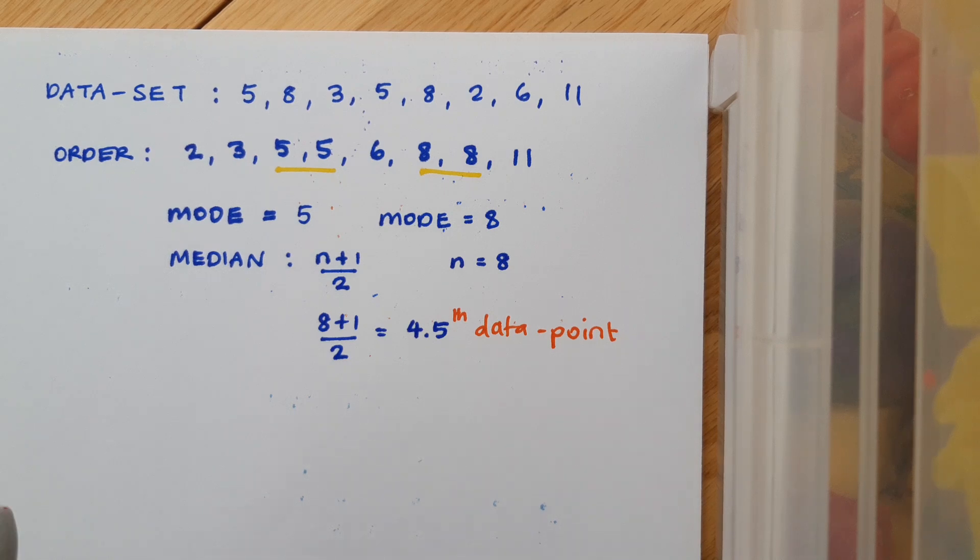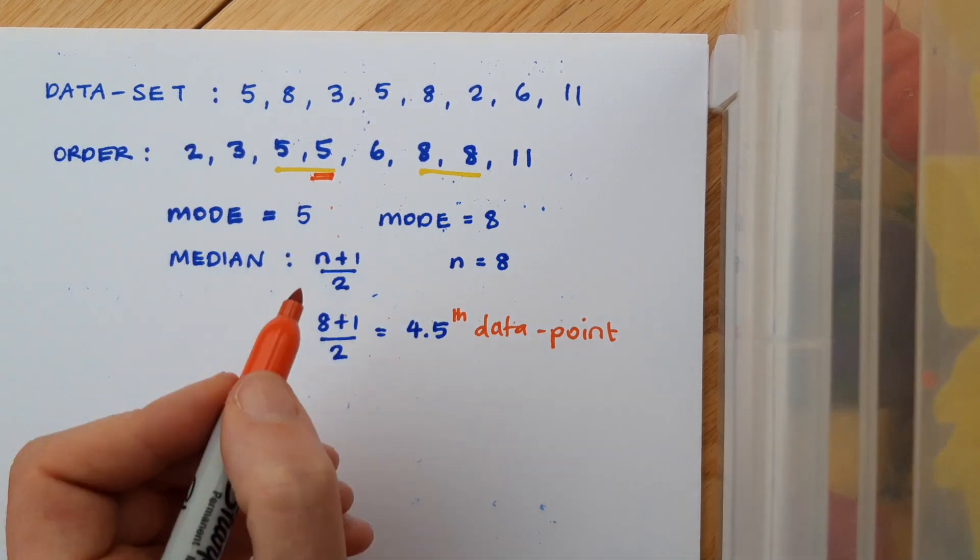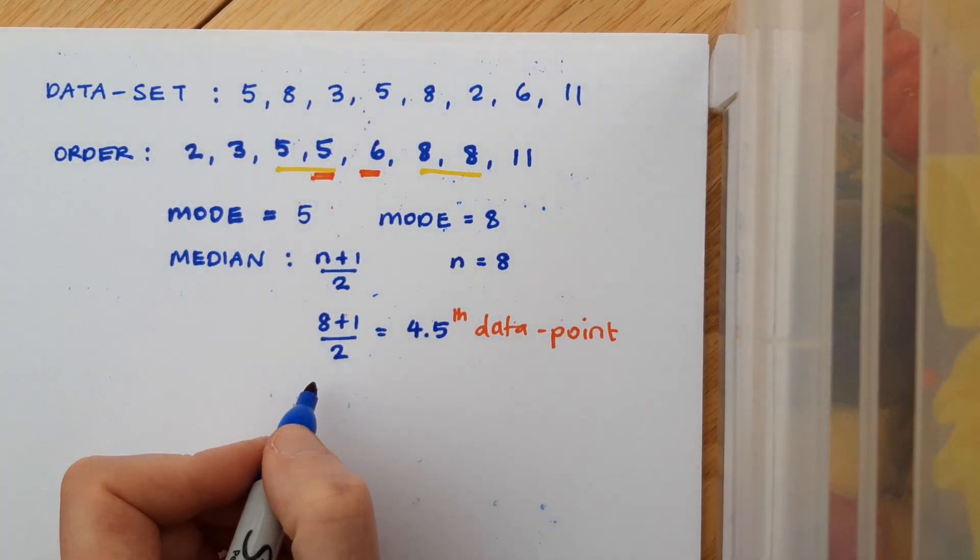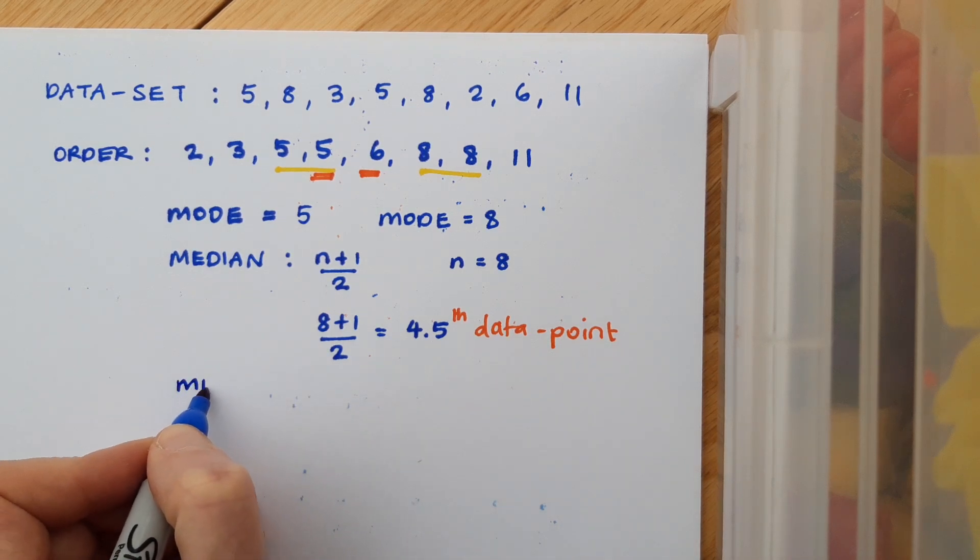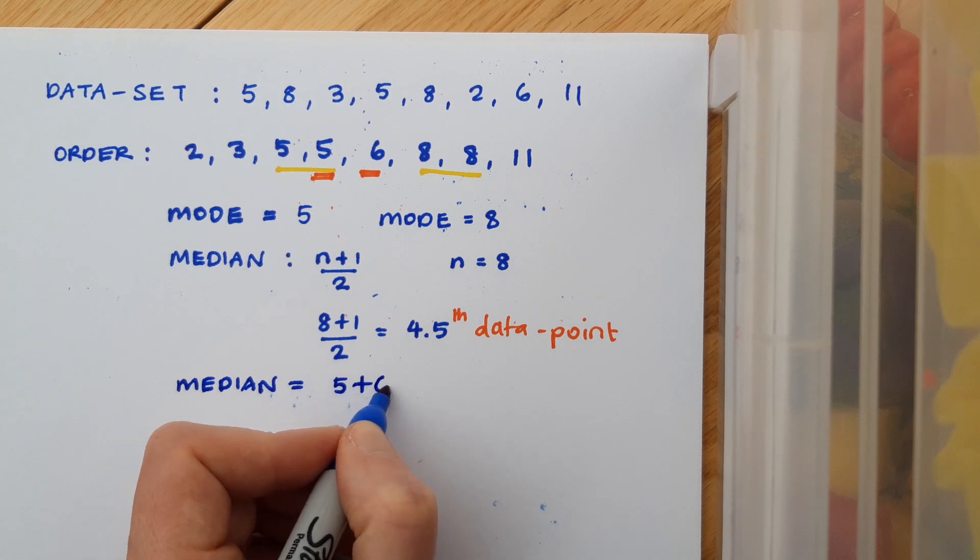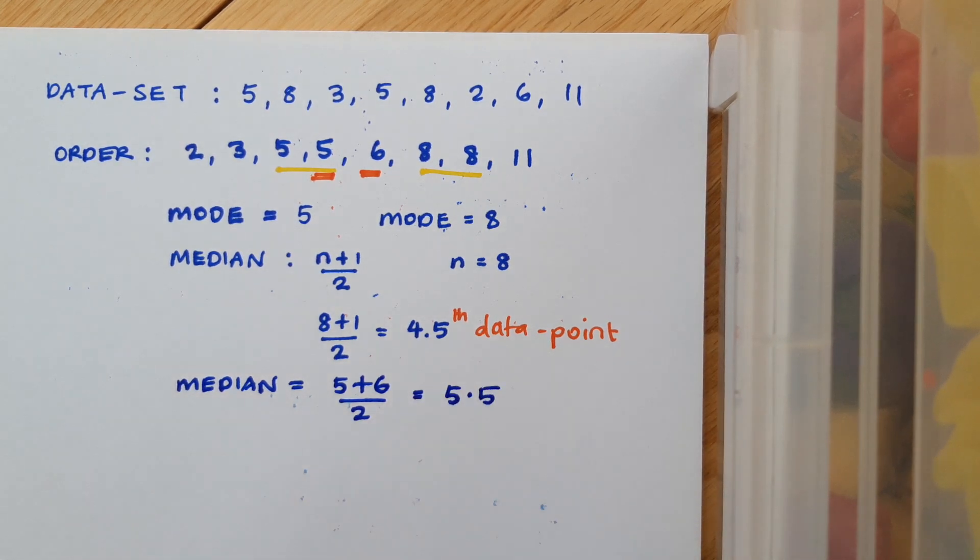So when I go to my data set, 1, 2, 3, 4, my fourth data point is 5. My fifth data point is 6. And so my median is going to be 5 plus 6 over 2, which is 5.5.